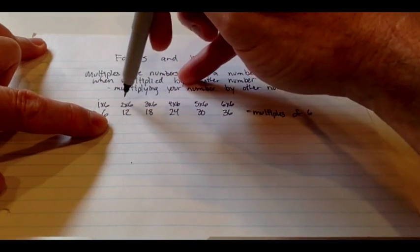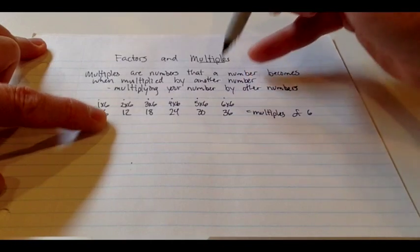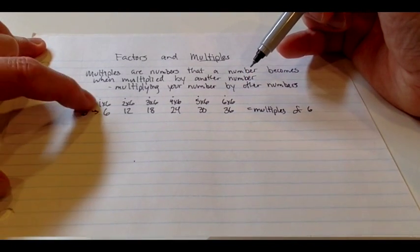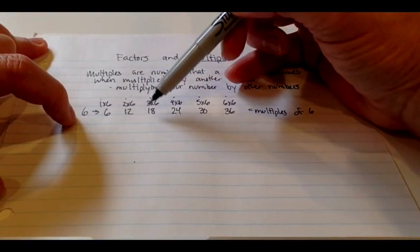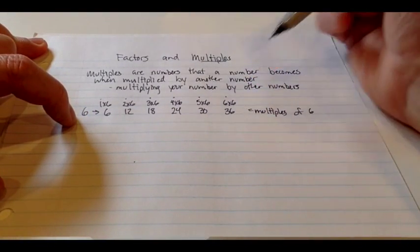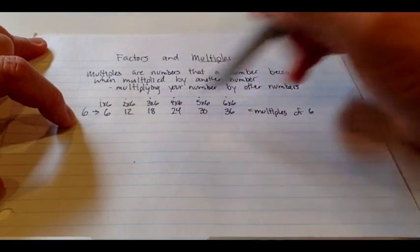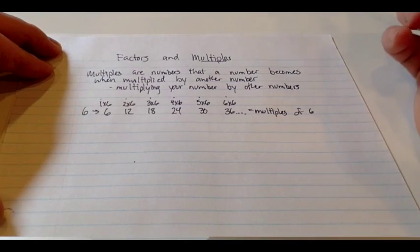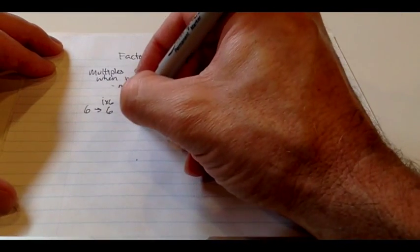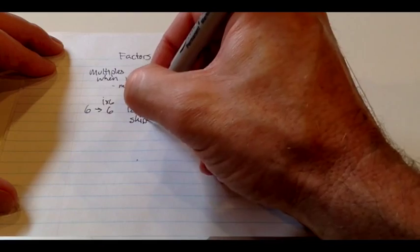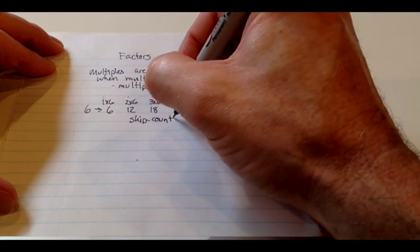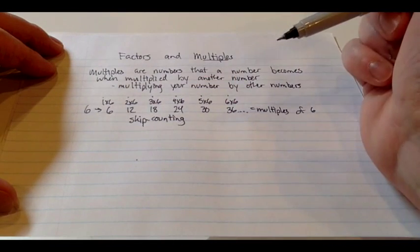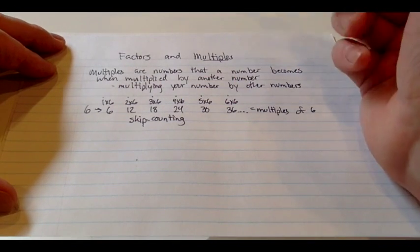By the 1, by the 2, by the 3, by the 4, etc. So 6, multiples of 6 are 6 times 1 is 6, 6 times 2 is 12, then 18, 24, 30, and 36. These are the multiples of 6, and we could keep going. All I have to do is add 6 each time and I'm going to keep getting bigger multiples. Another way of looking at this is this is skip counting. I'm skip counting by the number that I started with, and that gives me the multiples.